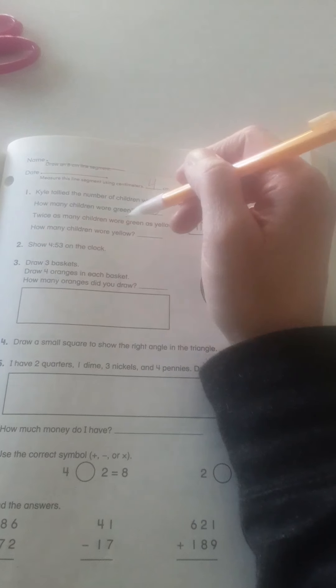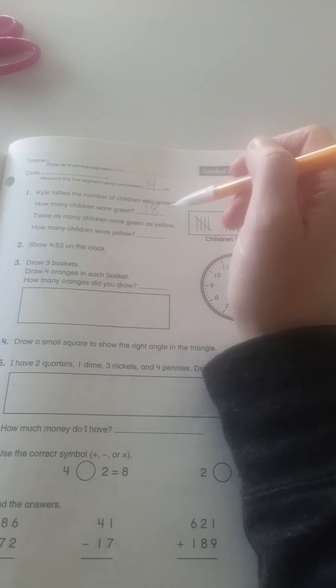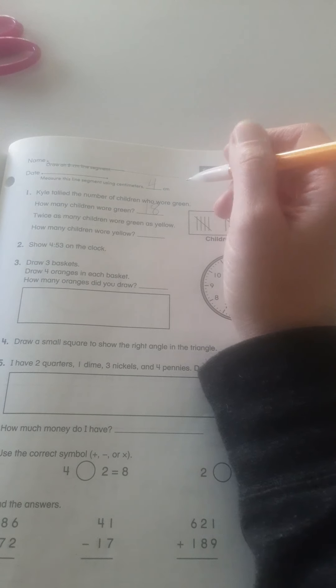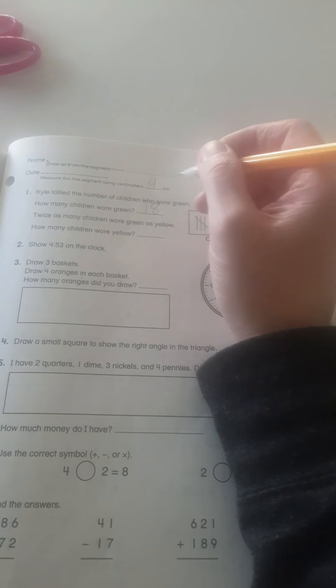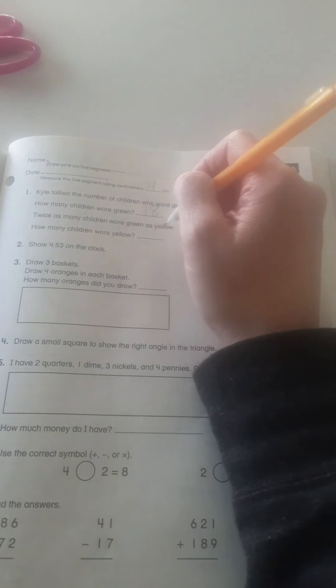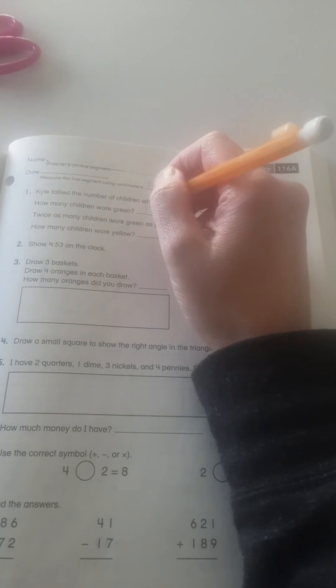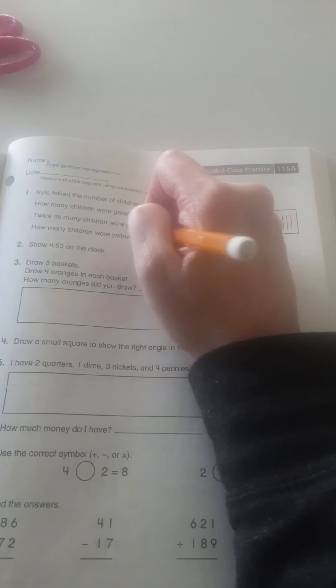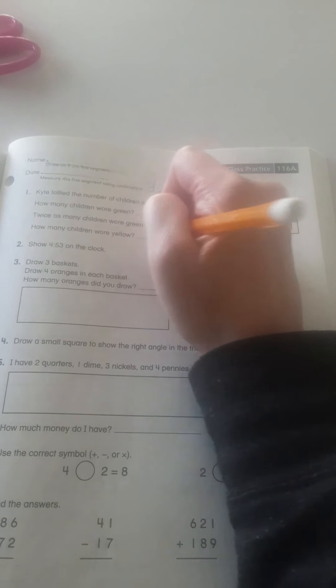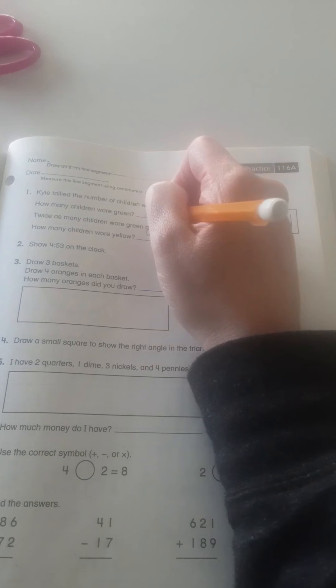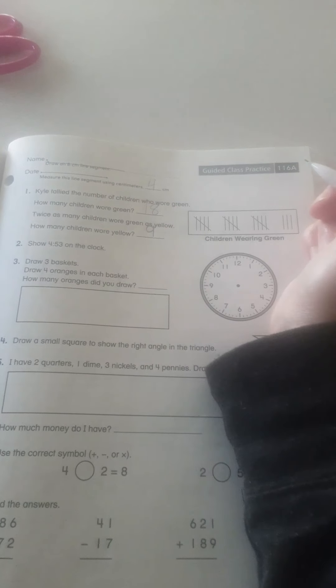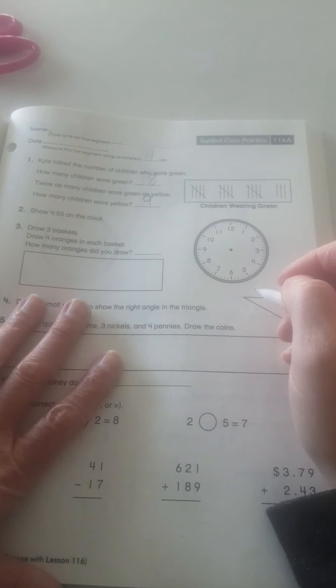Twice as many wore green as yellow. Twice as many. Do you know what I have to do when it says twice as many? So, more people wore green than yellow. So, yellow is going to be a smaller number. So, that would be 9 because 9 plus 9 is 18. It's the first time we've done one of those problems.